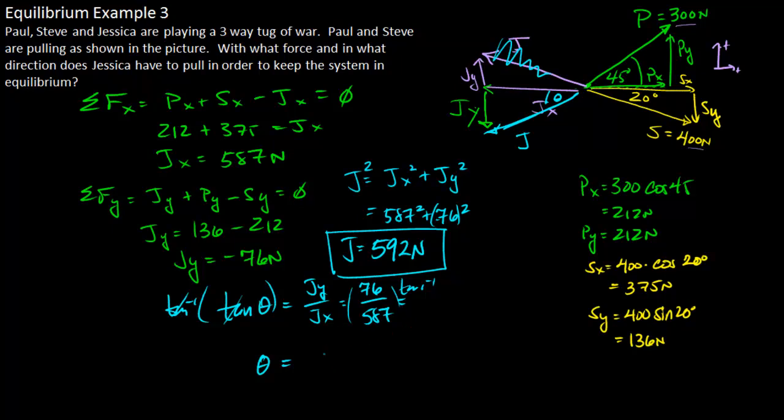So we get that in order for Jessica to keep this system in equilibrium, to balance out Paul and Steve, she must apply a force of 592 newtons at 7.4 degrees below the horizontal as shown.